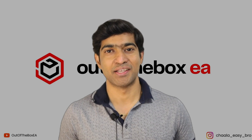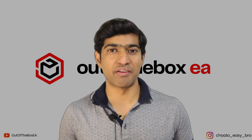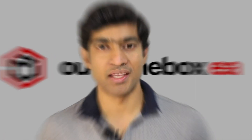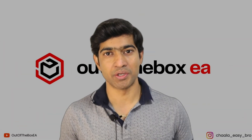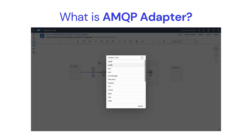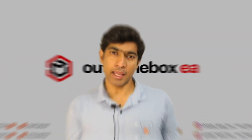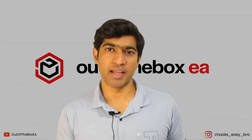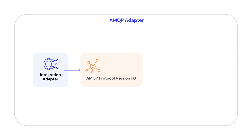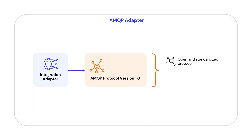Welcome to another video. In this video I'm going to cover what is AMQP adapter. AMQP adapter is an integration adapter that supports AMQP protocol version 1.0, which is an open and standardized protocol for message-oriented middleware.